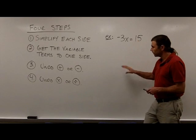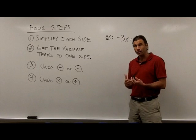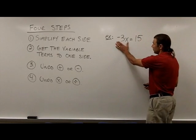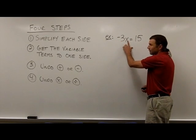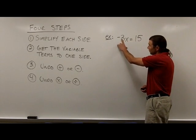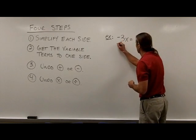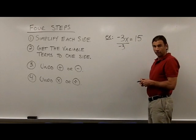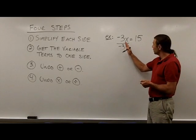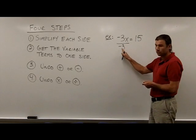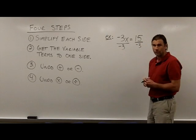For this equation, all we need is step 4: undo multiplication or division on the variable side. Looking at the left side, we have negative 3 times x, so we need to undo multiplication by negative 3 by dividing by negative 3. Whatever we do to one side of the equation, we must do the same to the other side, so we divide both sides by negative 3.